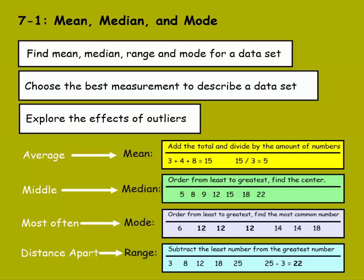We're on Lesson 1 of Chapter 7, which is Mean, Median, and Mode. First, we're going to find the mean, median, range, and mode for a data set. Then we're going to choose the best measurement to describe that data set. Then we're going to explore the effects of outliers.